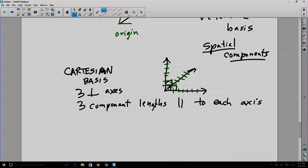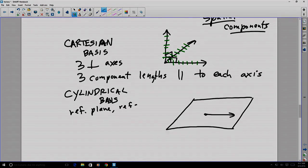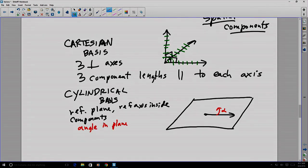You can also have a cylindrical basis. Our reference for a cylindrical basis consists of a reference plane with a reference axis inside that plane. And then our components are a direction as defined by an angle within the plane, some sort of angle inside the plane, a length in that direction, and then in 3D, our third component is a vertical length out of the plane. The three of those together define a location in space and a vector in a cylindrical basis.